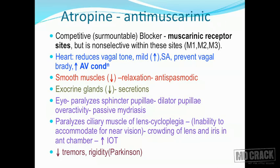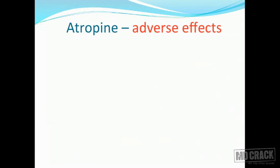The last action of atropine is in the CNS. It is able to decrease tremors and rigidity by opposing the central effects of acetylcholine. In the CNS, atropine can also produce stimulation, disorientation, confusion, and agitation.